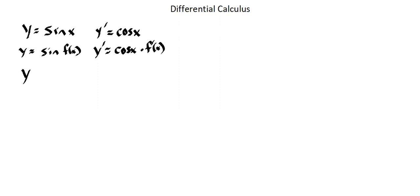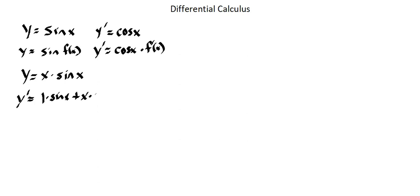Let's work through an example. Let's take the function y equals x times sine of x. We're going to apply the product rule: the derivative of the first function times the second function, plus the first function times the derivative of the second function. Our first function is x, so the derivative of x is 1 times sine of x, plus x times the derivative of sine of x, which is cosine of x. We end up with sine x plus x times cosine x.